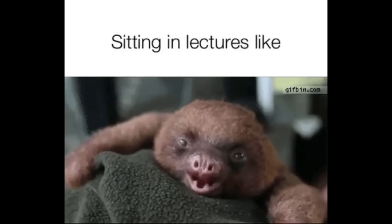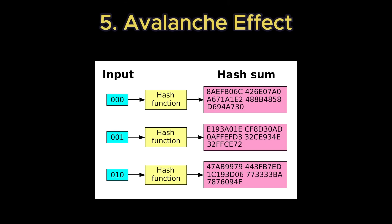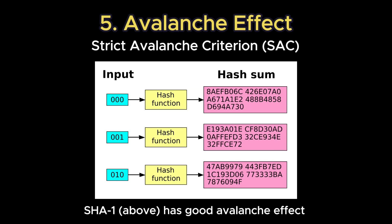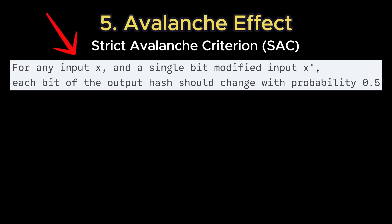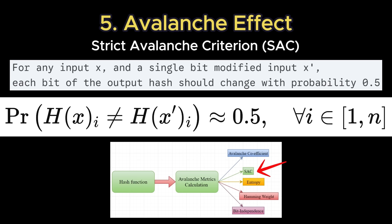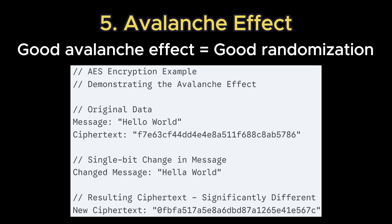Finally, one of the most important properties: a strong hash demonstrates an avalanche effect, where even a tiny change to the input, like flipping a single bit, results in a completely different hash, making patterns in the data undetectable. This can be expressed using the strict avalanche criterion, or SAC, which is a formalization of the avalanche effect. For any input x and a single-bit-modified input x', each bit of the output hash should change with probability approximately 0.5. The strict avalanche criterion is satisfied whenever a single input bit is complemented and each of the output bits changes with a 50% probability.